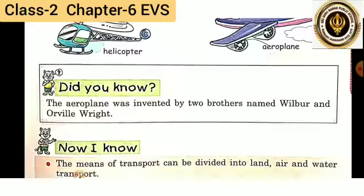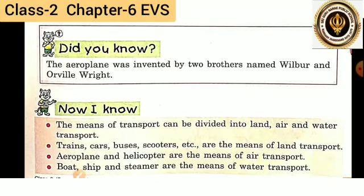Now I know the means of transport can be divided into land, air and water transport. Trains, cars, buses, scooters etc. are the means of land transport. Aeroplane and helicopter are the means of air transport, and boat, ship and steamer are the means of water transport.